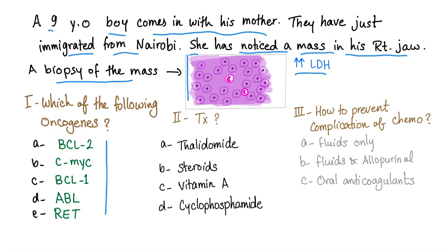Second question: what's the treatment? Is it thalidomide, steroids, vitamin A, or cyclophosphamide? Third question: how to prevent complications of chemotherapy? Fluids only, fluids and allopurinol, or oral anticoagulants?